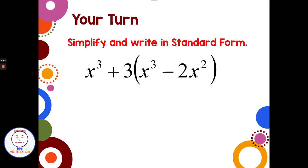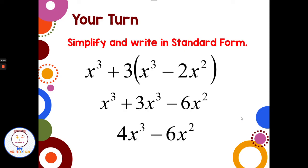Simplify and write in descending order — there's a little distributive property before you add and subtract. Distributing 3 gives 3x³ and 3 times -2x² is -6x². Then combining like terms, x³ + 3x³ = 4x³, so we get 4x³ - 6x². With degrees of 3 and 2, it's in descending order.